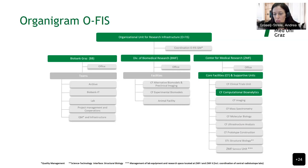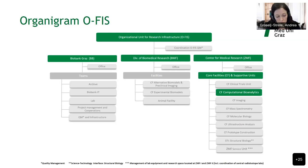The Center for Medical Research was established in 2004 to provide access to biomedical research infrastructure for clinicians and basic research scientists. It houses nine core facilities: a clinical trials unit, Computational Bioanalytics, CF Imaging, CF Mass Spectrometry, Molecular Biology, Ultra Structure Analysis, Prototype Construction, Structural Biology, and the Service Unit.